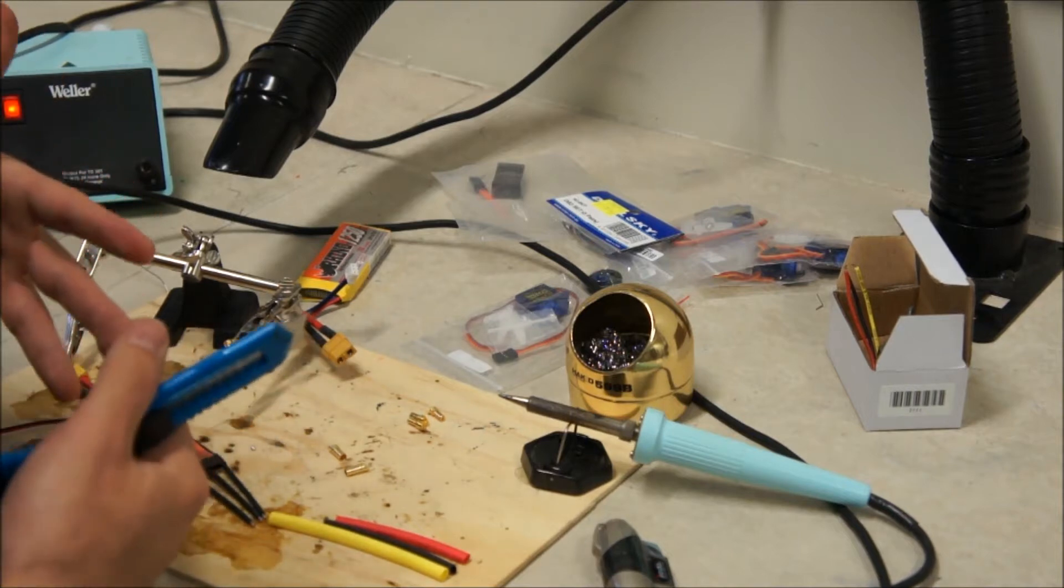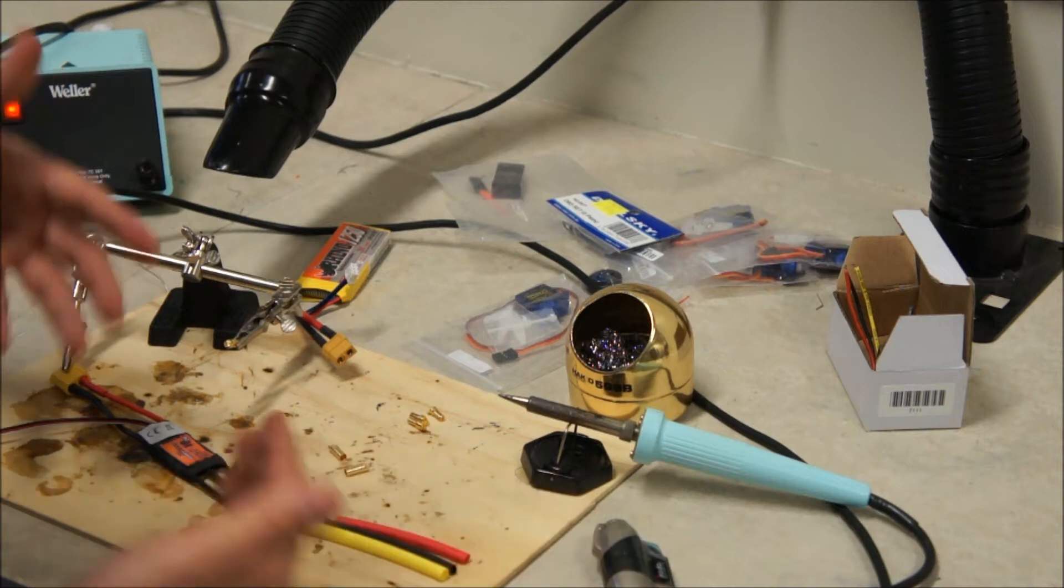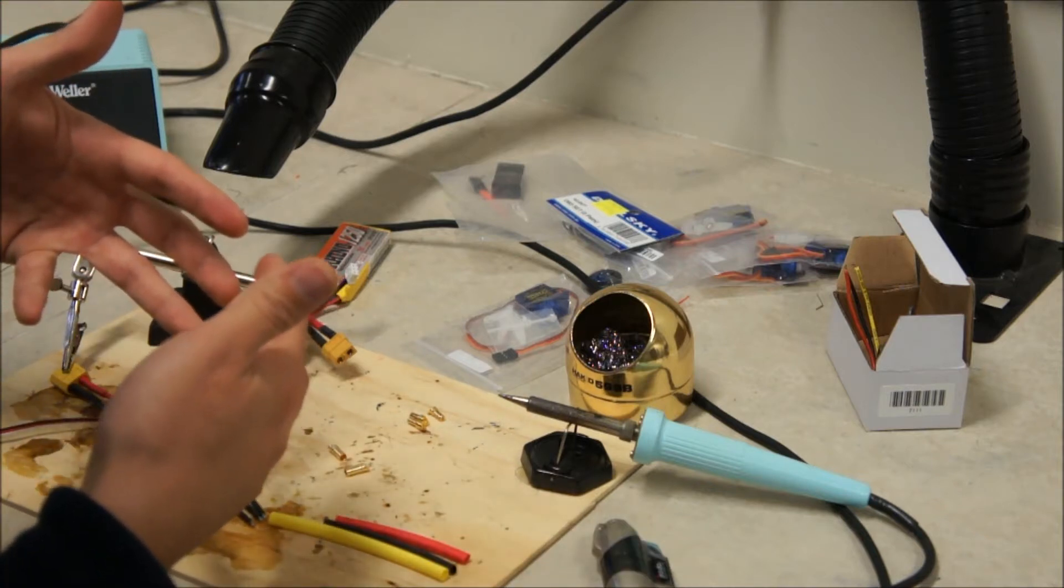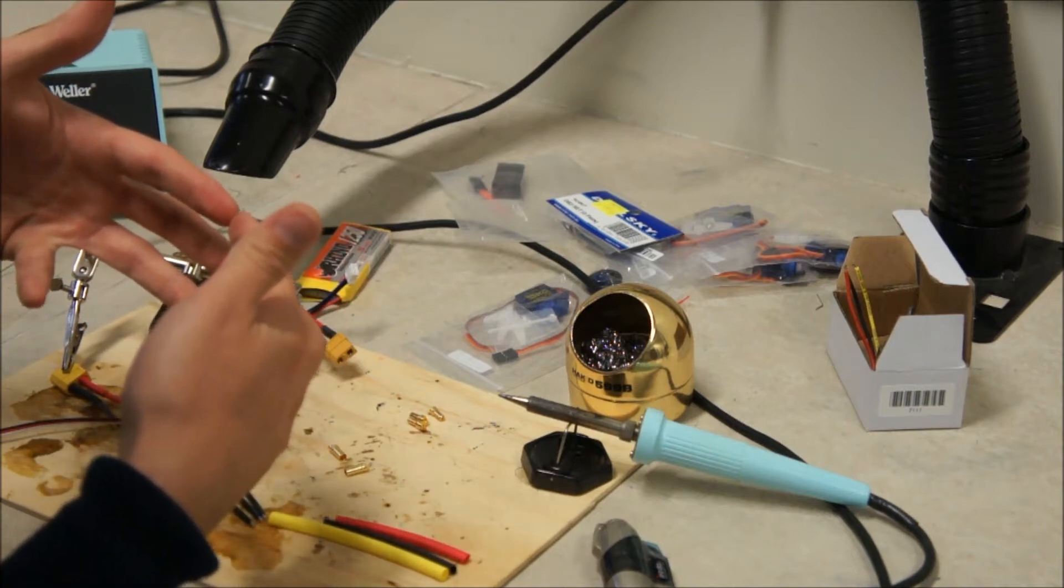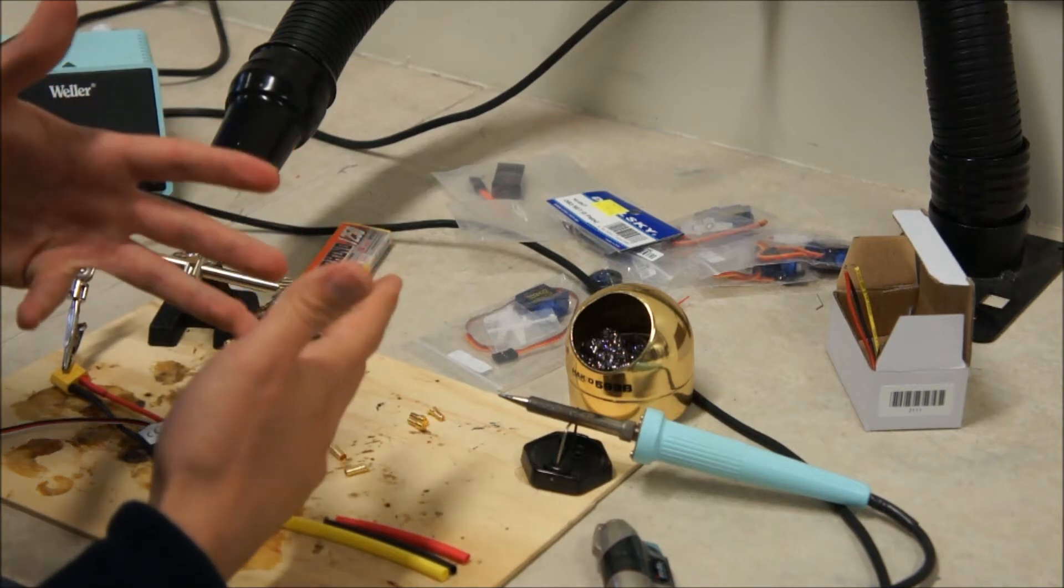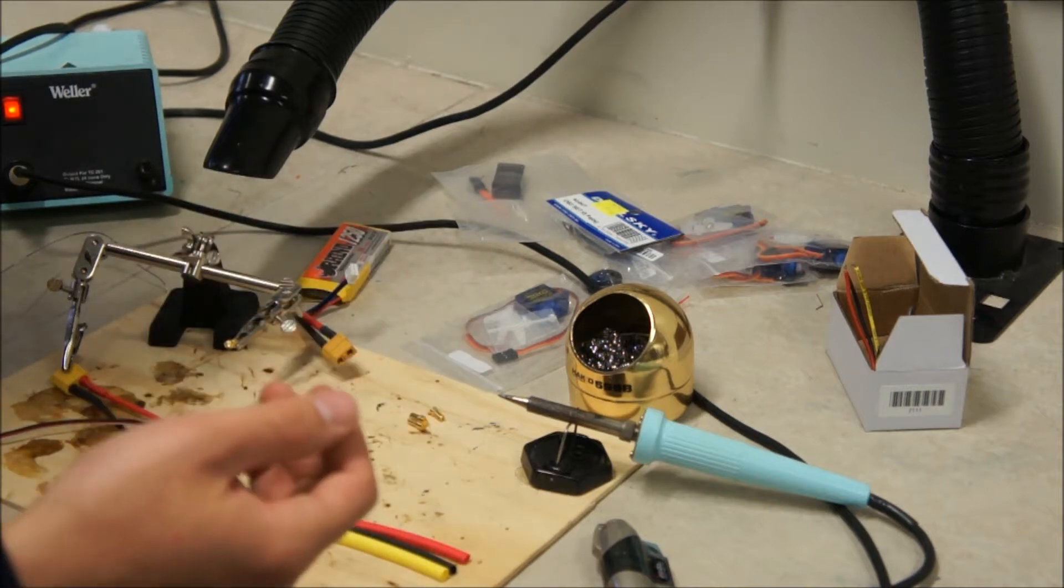If you switch any two color combinations, so if you had the red, yellow and black plugged into each other, the motor would spin in one direction. But then if you changed it so it was red together, black and yellow together, it would spin in the opposite direction. So if you change any two leads, the motor would change direction.